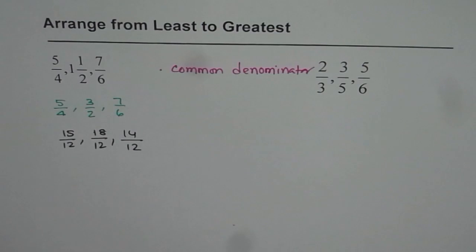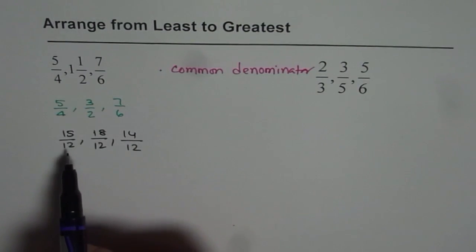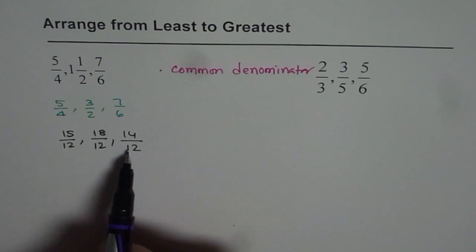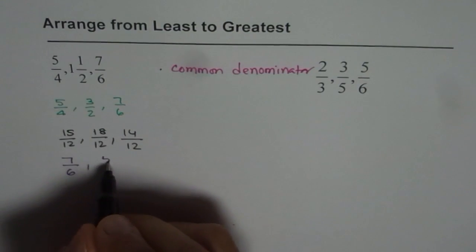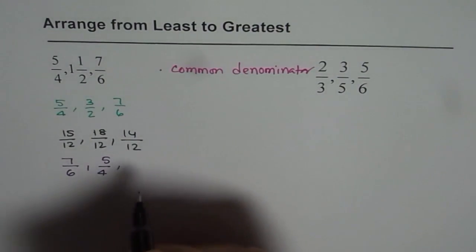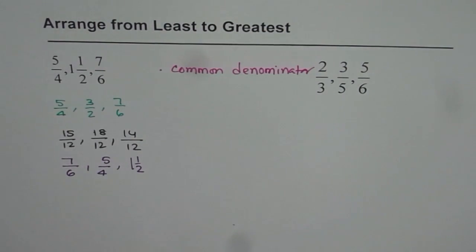So now I can write down my answer, which is least to greatest. Now denominator is common, so we can compare easily. This is the lowest number. So 7 over 6 will come first and then 5 over 4 and then we have 1 and 1 over 2. So that is the answer for the first one.